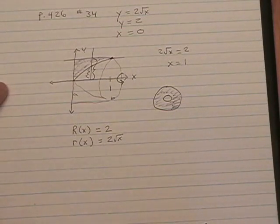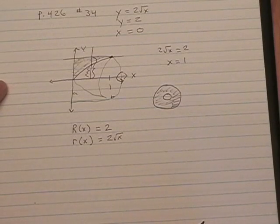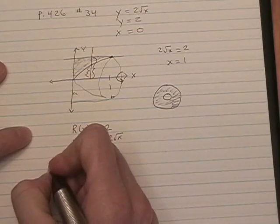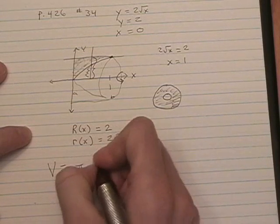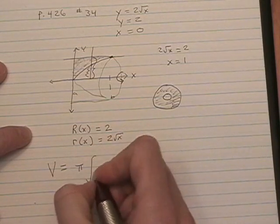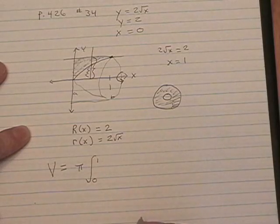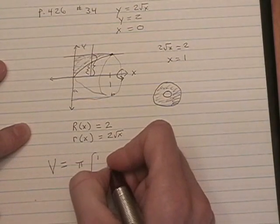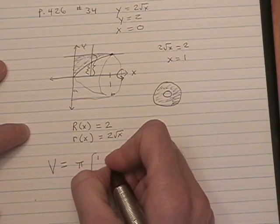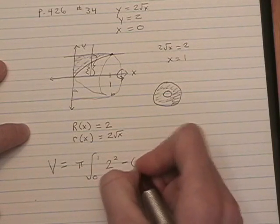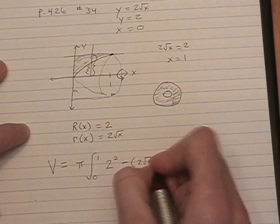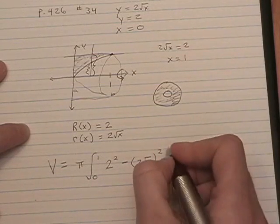The integral is going to be the same for every washer problem you do. V equals pi times the integral from a to b. In our case, 0 to 1.